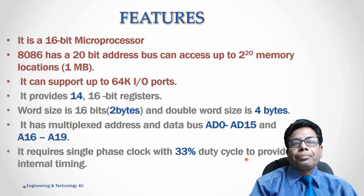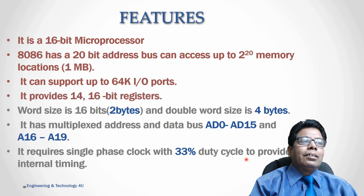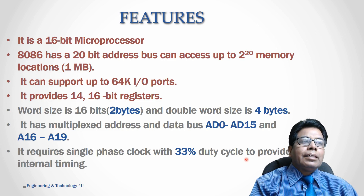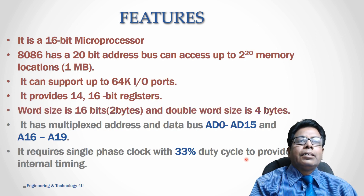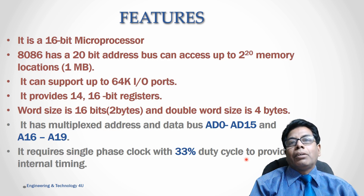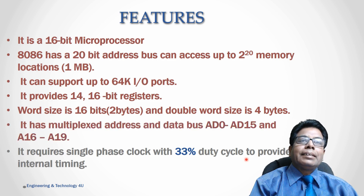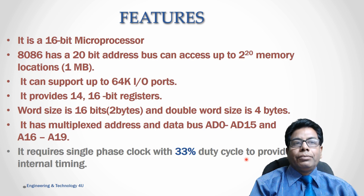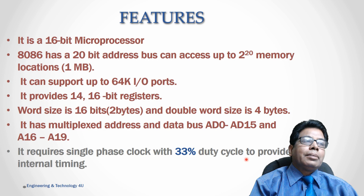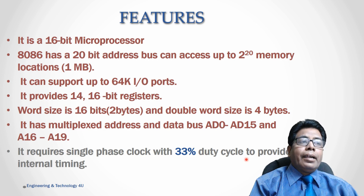It provides 14 16-bit registers — we'll see the details of the registers as we go further. The word size in 8086 is 16-bit or 2 bytes, and the double word size is 4 bytes. It has a multiplexed address and data bus: the lower order bus is A0 to AD7 and the higher order bus is A16 to A19, giving a total 20-bit address.